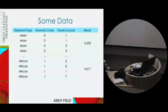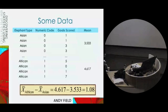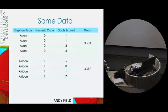These are the means within the two groups. The Asian elephants, across the whole season, averaged 3.5 goals. For the African elephants it was slightly higher — 4.6 goals. These means are going to become relevant later on.